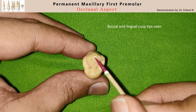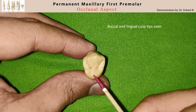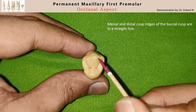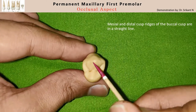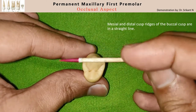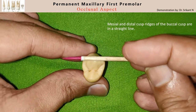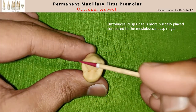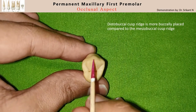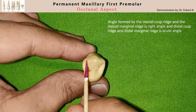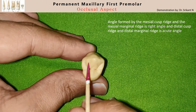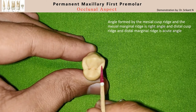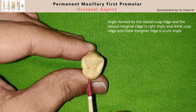When you see the occlusal surface, you can appreciate the buccal cusp tip and the lingual cusp tip. The buccal cusp tip is formed by the mesial cusp ridge and the distal cusp ridge. If you observe the mesial and the distal cusp ridge, they are almost in a straight line, such that the distal cusp ridge is more buccally placed than the mesial cusp ridge. This configuration makes the mesial cusp ridge and the mesial marginal ridge meet at 90 degrees, and the distal cusp ridge and the distal marginal ridge meet at an acute angle.